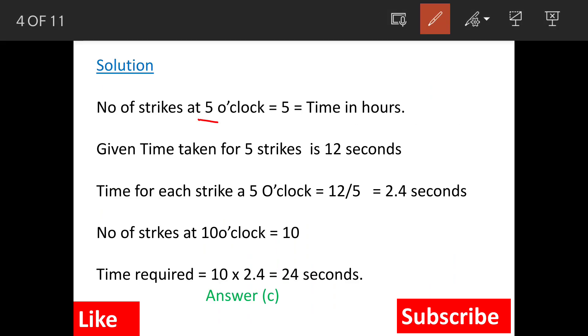Number of strikes at 5 o'clock are 5 and time taken is 12 seconds. So time for each strike is 12 divided by 5, 2.4 seconds.